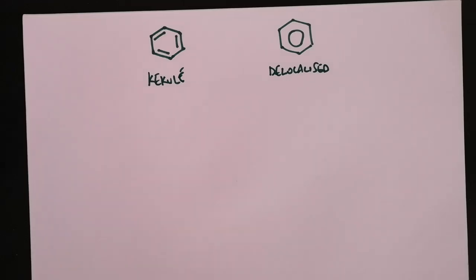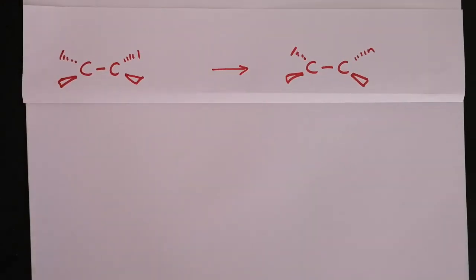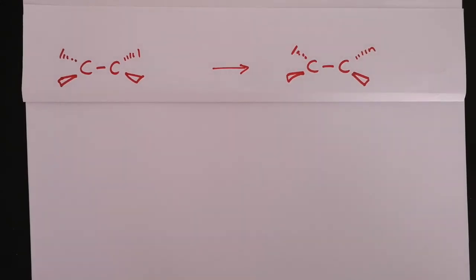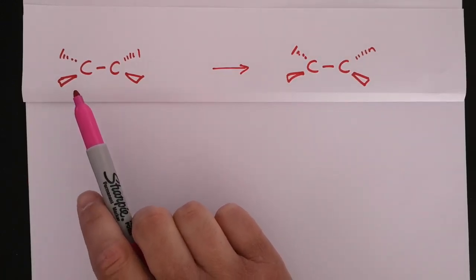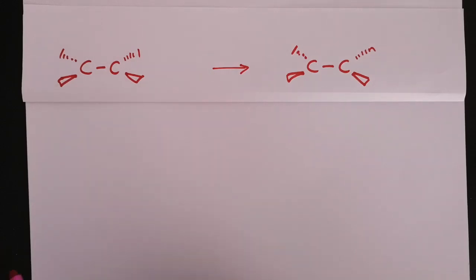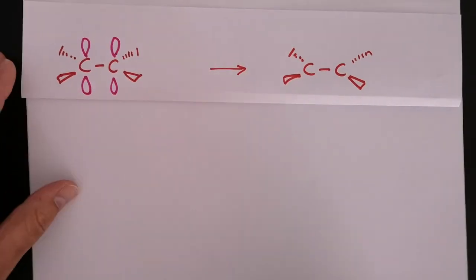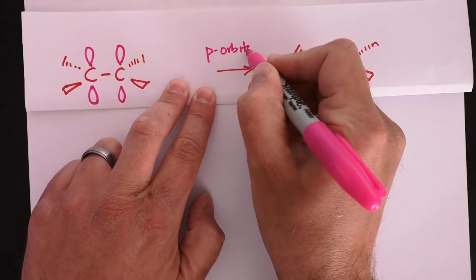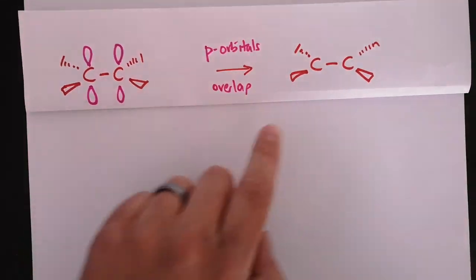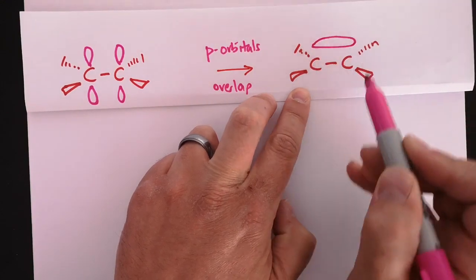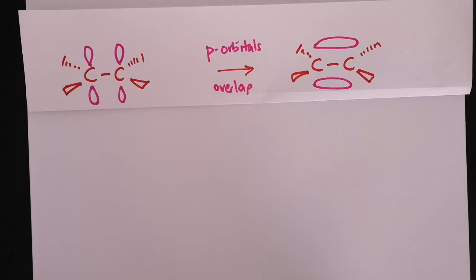Before we look at the bonding of the Kekulé and delocalized models, I'd like to go back to year 12 when we were looking at how alkenes are formed, and show how a double bond is formed between two carbons. We should remember from year 12 that when we have a double bond, the carbons have three sigma bonds attached already. That means there is a spare P orbital on each carbon, which can overlap to form a pi bond.